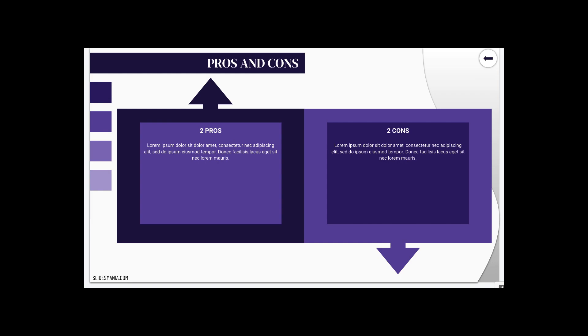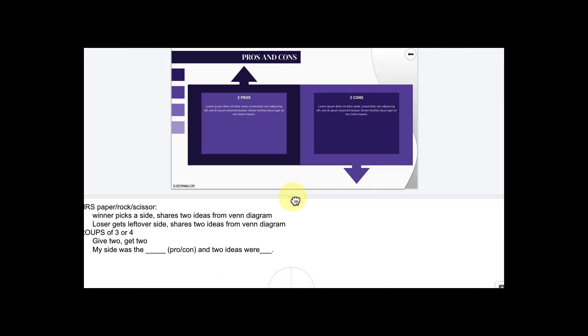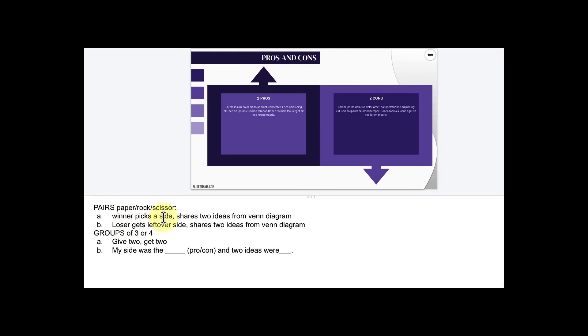And then the pros and cons was listening to your partner. They did paper, rock, scissors. Winner picks a side, either the pro or the con, and then shares two ideas from the Venn diagram. The loser had to get the leftover side and then share two ideas from the Venn diagram. And then after they were done, they got into groups of three or four and they gave two ideas from whatever they picked, either pro or con, and then they can use the sentence frame. My side was blank, and two ideas were blank.